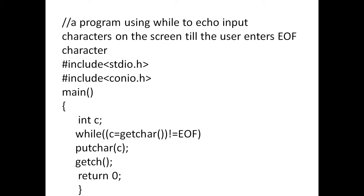Next, the main function. After the main function curly braces: int c, while c is equal to getchar, not equal to EOF — means end of file — putchar c, return 0. So this is the program. Whenever you enter data from stdin, meaning from the keyboard, after entering some characters if you press end of file — it means Ctrl+Z — automatically it will echo to the screen.